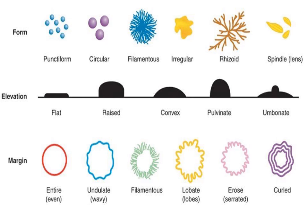Elevation: some colonies appear flat, raised, convex, pulvenate — which is cushion-shaped — or umbonate.